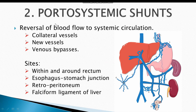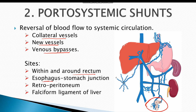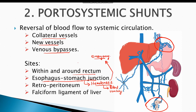Portal hypertension also results in portosystemic shunts, causing reversal of blood flow to the systemic circulation through activation of collateral vessels, formation of new blood vessels, and venous bypasses. Bypasses form within and around the rectum, and also at the esophago-gastric junction. Bleeding from these esophageal varices results in hematemesis — blood vomiting — which constitutes a medical emergency requiring ligation of these vessels.